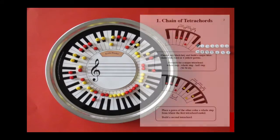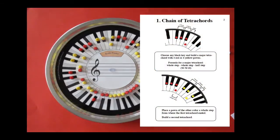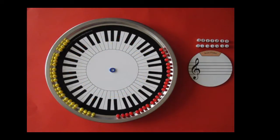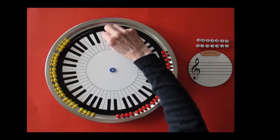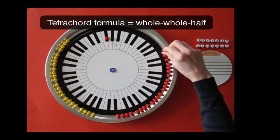The first activity is building a chain of four-note tetrachords. You'll use 24 red and 24 yellow magnetic pawns and the 12-inch circular keyboard. For the first tetrachord, place a red pawn on the F-sharp, G-flat key. Follow the formula whole-step, whole-step, half-step to build a major tetrachord.